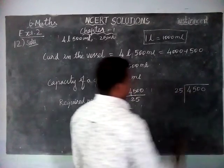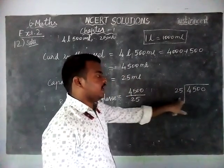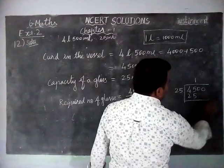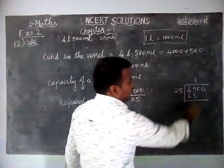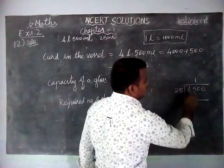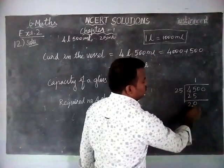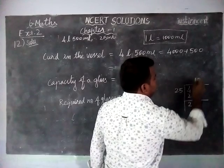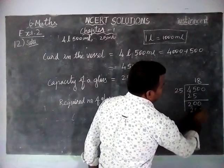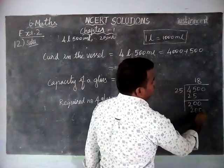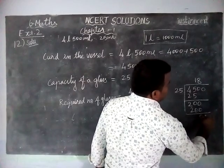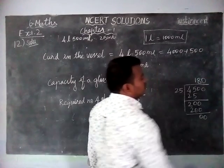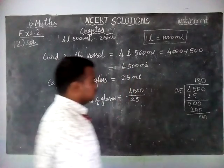Divide 4500 by 25. In 45, one 25 is there, then 5 minus 5 equals 0. 4 minus 2 equals 2. Then we are adding 0. In 200, eight 25s are 200, and here we have 0. So when we are taking this 0 here, we have to add 0 in that quotient also. We get 180 glasses.